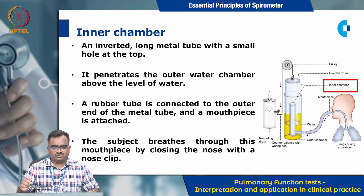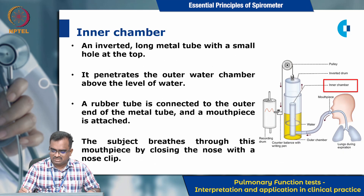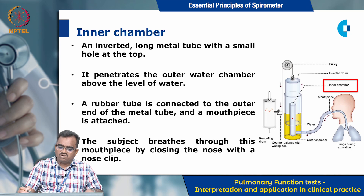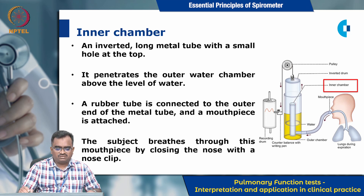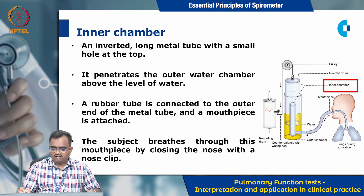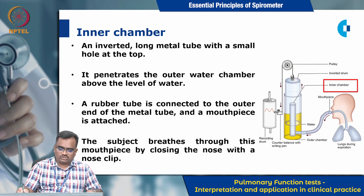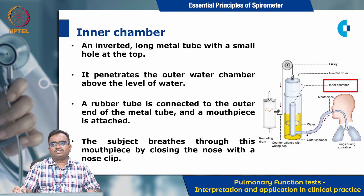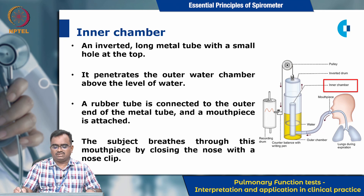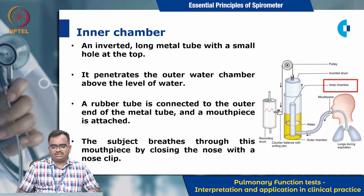Moving on to the inner chamber: it consists of an inverted long metal tube with a small hole at the top, which penetrates the outer chamber above the level of water. A rubber tube is connected to the outer end of the metal tube and a mouthpiece is attached. The subject breathes through this mouthpiece by closing the nose with a nose clip.